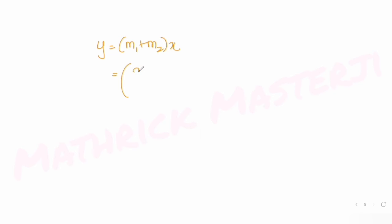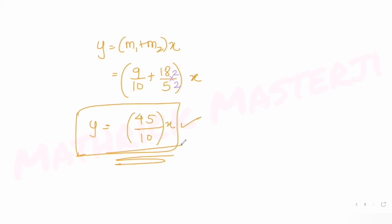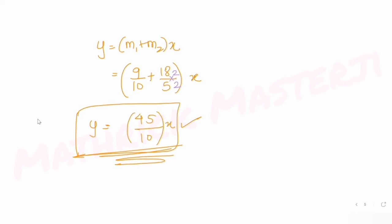Now the equation of the new line is y = (m1 + m2)x = (9/10 + 18/5)x. Making the denominator the same: 9/10 + 36/10 = 45/10. So the line equation becomes y = (45/10)x.